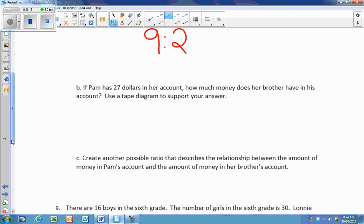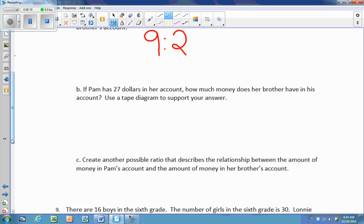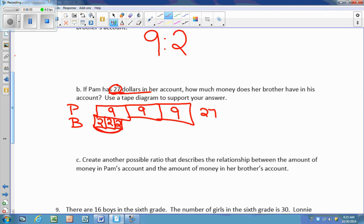So now they're asking us if Pam had $27 in her account, how much money does her brother have? Use a tape diagram to support your answer. So the original ratio is if Pam has $9, her brother has $2. Well, we want to know if Pam, this is Pam, this is her brother, went all the way to $27. So we're going to give Pam another $9, and for every $9 she gets, her brother gets $2. Another $9, and her brother gets $2. And we would continue this to get to whatever our total number, which is $27. So I know that three $9s give me $27, so I can stop there. And that tells me that her brother had $2 for $6.